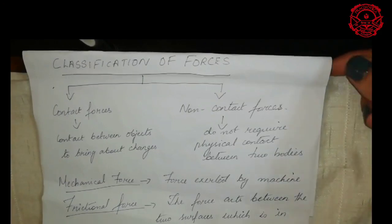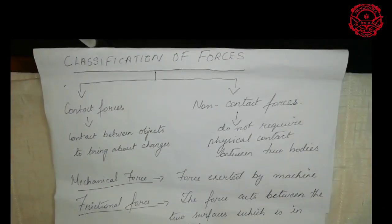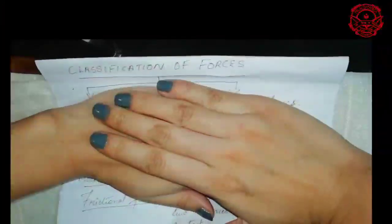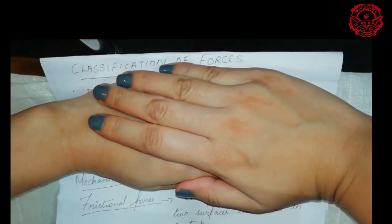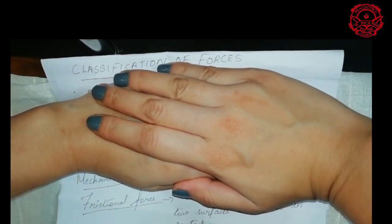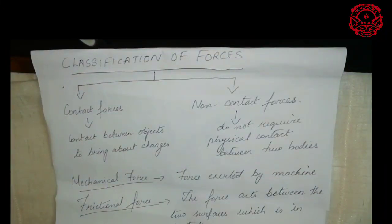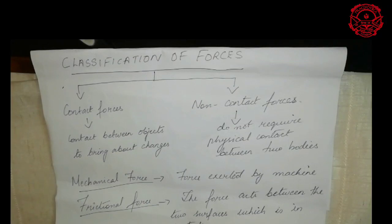Next we have frictional force — the force that acts between two surfaces which are in contact. When surface one and surface two are in contact, a force acts between the two surfaces. Then we have muscular force — the force generated by our body when in contact with objects. When the muscles in our body expand and contract, we use muscular force to carry out our physical activities.